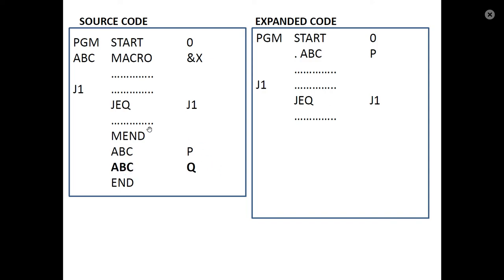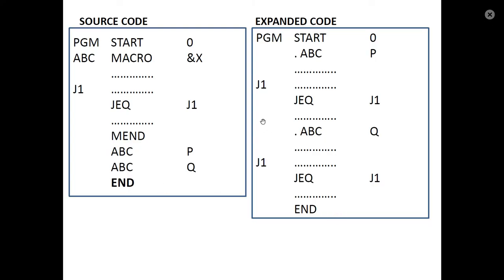During the second call, we copy and paste the same code. When we do this, it is not possible to distinguish between the two labels, because both expansions produce the same label names. This causes a problem in macro expansion.